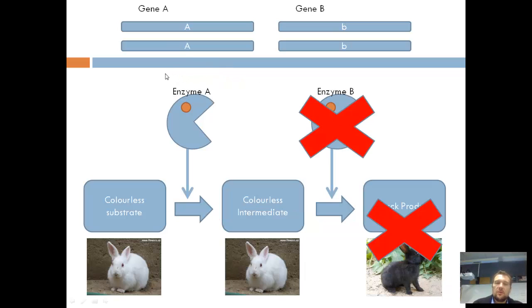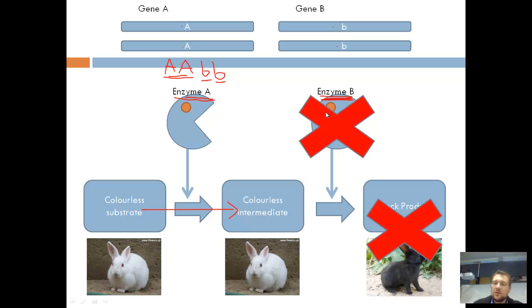Let's change it up. This time we have big A, big A on one pair of chromosomes, and little B, little B on the other pair. We've still got big A's, so we can still make enzyme A and turn the starting chemical into the intermediate. But we've only got little B's, which means we can't make enzyme B anymore. Because that enzyme is no longer present, there's nothing to convert the intermediate into the final product. The chain is broken — the metabolic pathway cannot continue beyond that point — which means we can't make the black product, and we end up with a white rabbit.